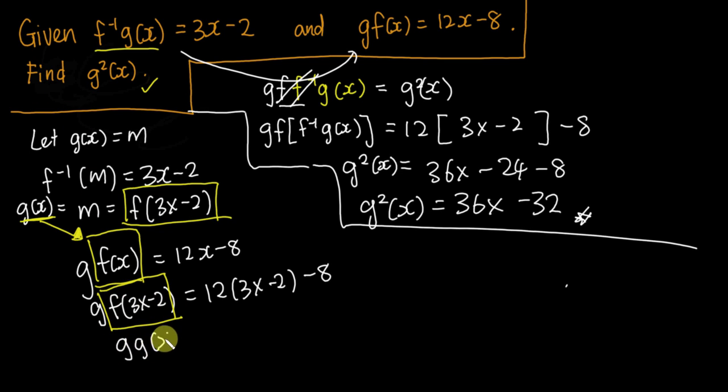Then here I will just solve it, and then I will get 36x minus 24 minus 8. So g∘g(x), which basically is g squared x, equals 36x minus 32. Both methods actually will get the same answer.